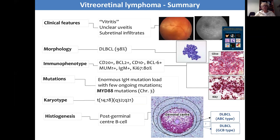In up to 70% of cases there is an MYD88 mutation. Vitreoretinal lymphomas have a very high load of somatic mutations, very similar to what you see in CNS lymphomas, and there is a great deal of similarity between the two. Through analysis of chorioretinal biopsies, we've been able to demonstrate these tumours — these diffuse large B-cell lymphomas — probably belong to the ABC subtype and are really quite aggressive.